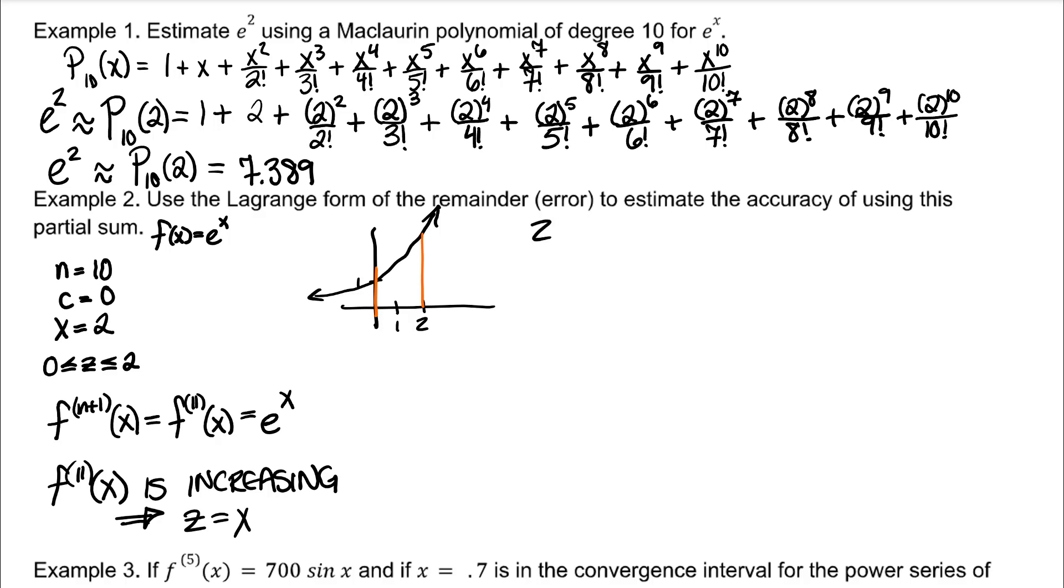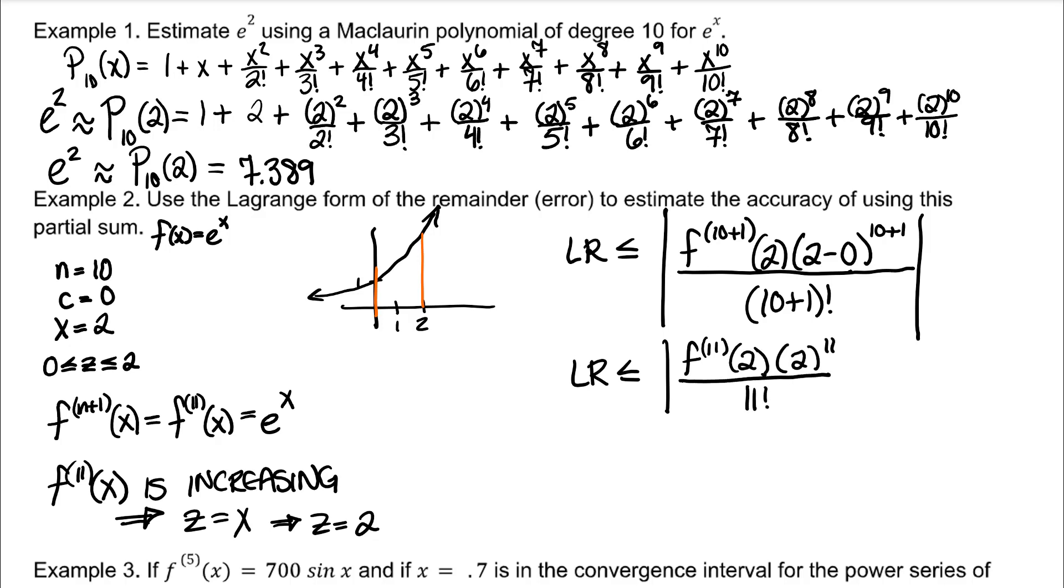Therefore, in this case, z would equal 2. Using the formula for the Lagrange remainder, we already figured out that f to the n plus 1 is f to the 11th. z is 2. Each of these numbers will always be the same. In this case, it's 11. The 11th derivative at 2 is e to the 2.